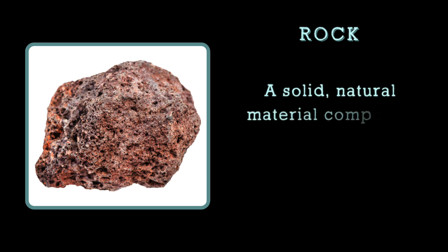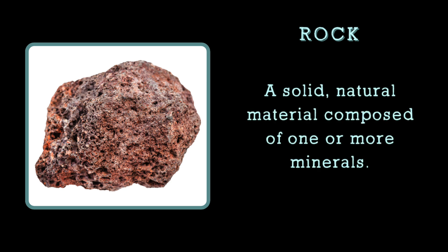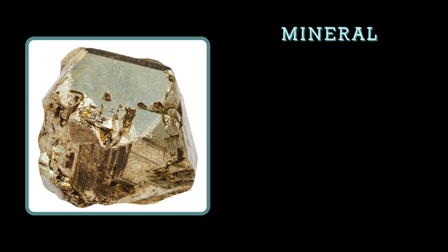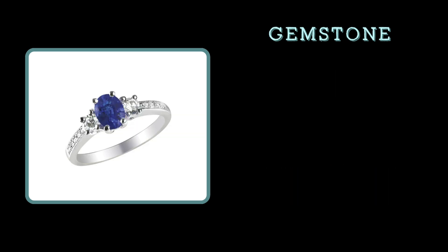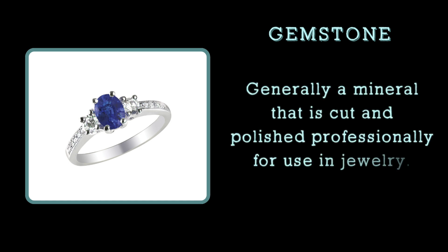Let's first briefly define each material before moving on to specific characteristics and examples from each of them. A rock is a solid natural material composed of one or more minerals. A mineral is also a solid naturally occurring material that is composed of one or more chemical elements — it has a defined chemical composition and crystalline structure. A gemstone is generally a mineral that is cut and polished professionally for use in jewelry. Now that we've learned the definitions of rocks, minerals, and gemstones, let's try to understand them at a deeper level.